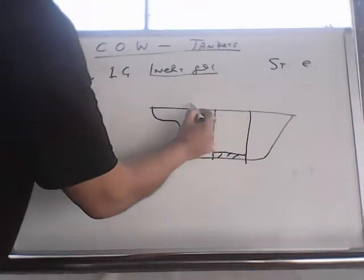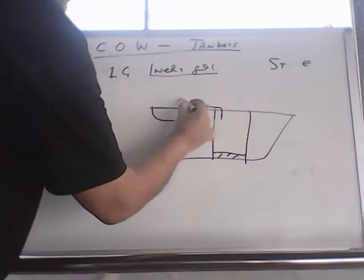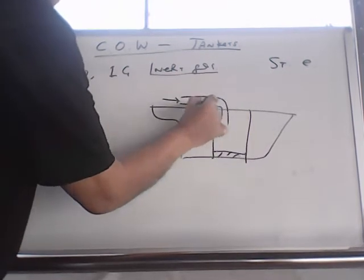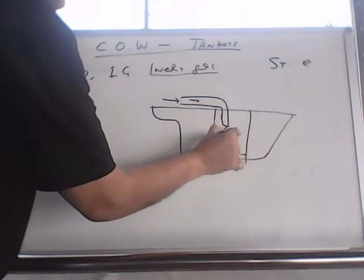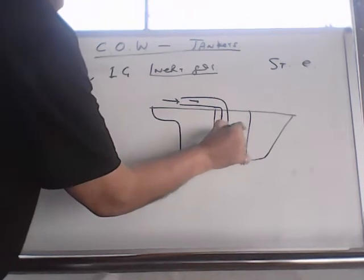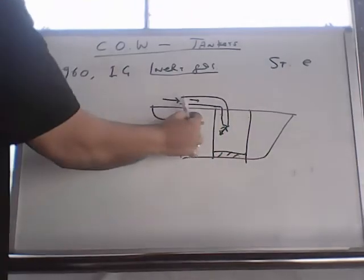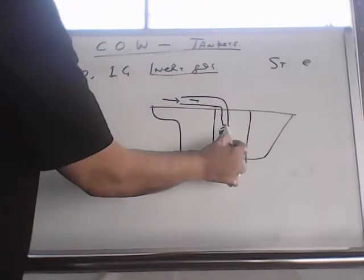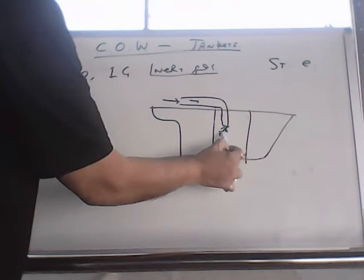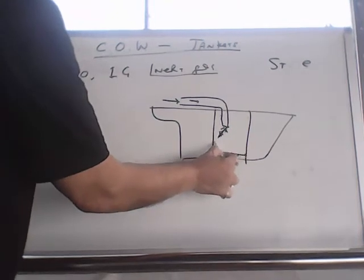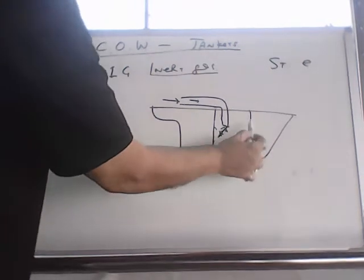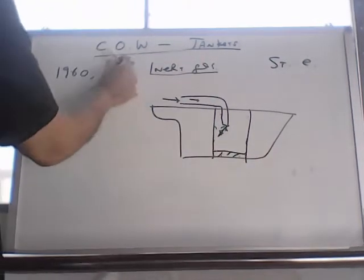Then on the tank cleaning pipeline the same cargo from another tank is pumped inside the tank cleaning line and you have tank cleaning machines. So this same cargo from another tank is pumped in the tank cleaning line and through the tank cleaning machine this hits every part of the cargo tank and the cargo tank gets cleaned by crude oil washing.